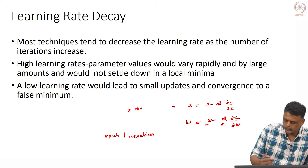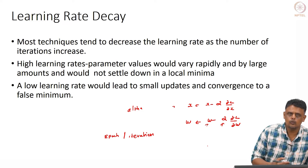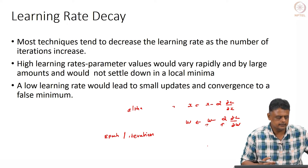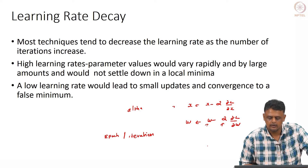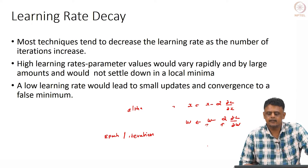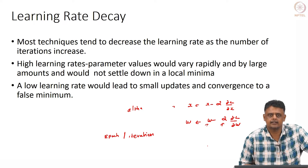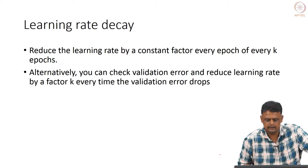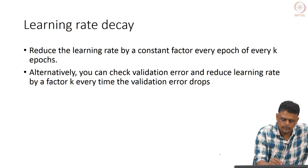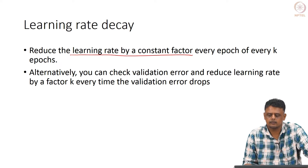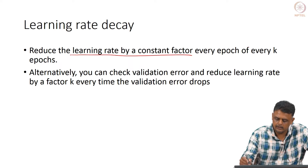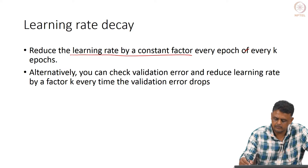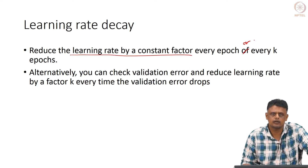There is no perfect way to know when to do what, but typically the technique people use is to decrease the learning rate as the number of iterations or epochs increases. One approach is to reduce the learning rate by a constant factor every epoch or every k epochs.